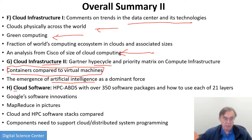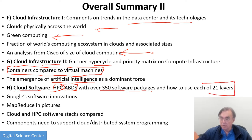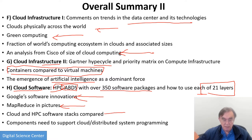Then we come to cloud software, the area where I work. We introduce the Apache big data software stack. We look at high performance computing. We note that there are 350 software packages in this category and they can be thought of in 21 different ways. We discuss Google, who has made huge contributions here. We look at MapReduce, one of their important contributions, in pictures. We compare HPC and cloud software stacks in detail, and then we look at what it takes to build a cloud or a distributed system programming environment.